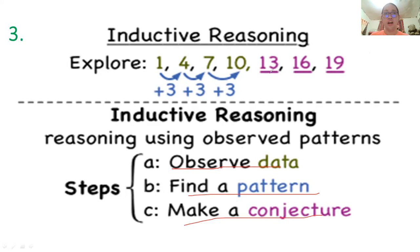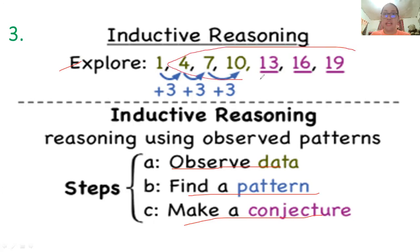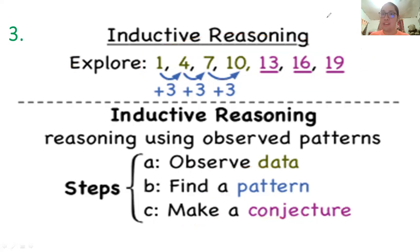Here is an example of inductive reasoning: given the sequence 1, 4, 7, 10, 13, 16, 19 — you observe the data, find the pattern, and notice that you add three to get to the next term. You then make the conjecture that this sequence follows a pattern of adding three to proceed to the next term.